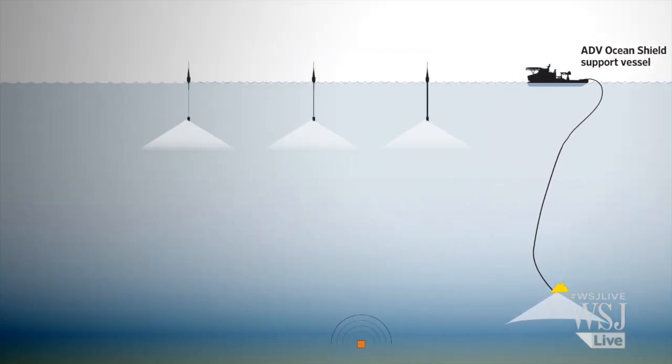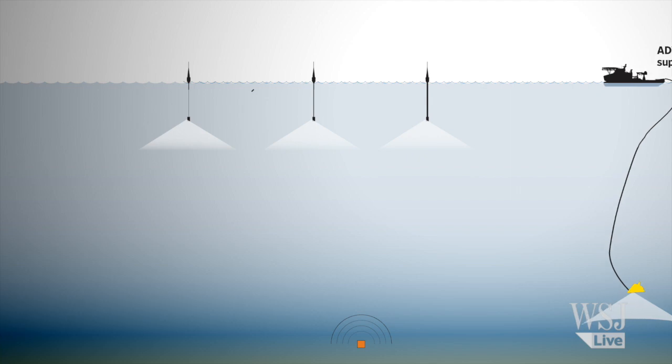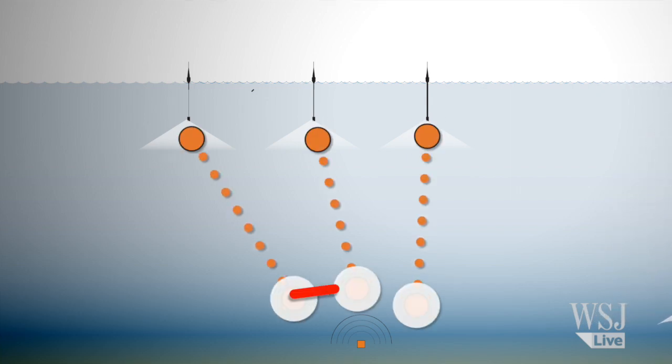The sonar buoys search a wider area, and if they detect the pings, could be used to triangulate the black box's location.